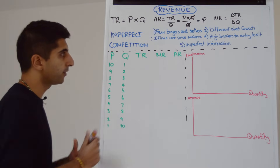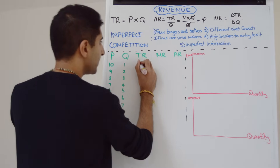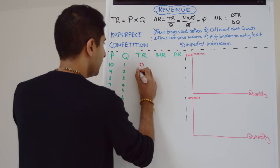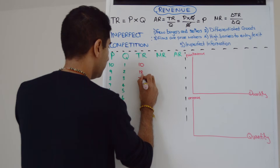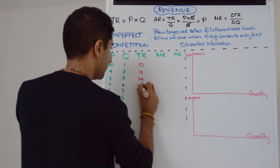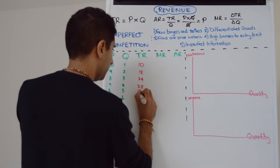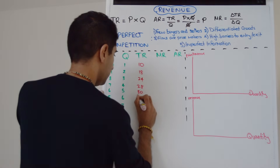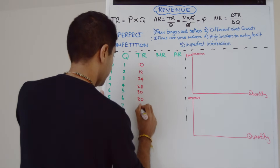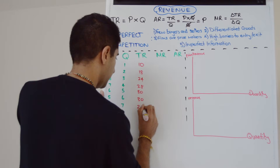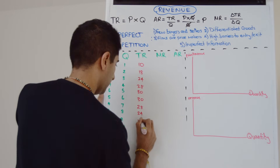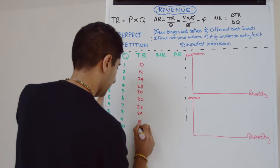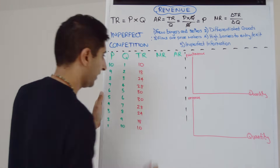TR is just P times Q, so we're going to get 10, 18, 24, 28, 30, 30, 28, 24, 18, and 10. P times Q in each case.